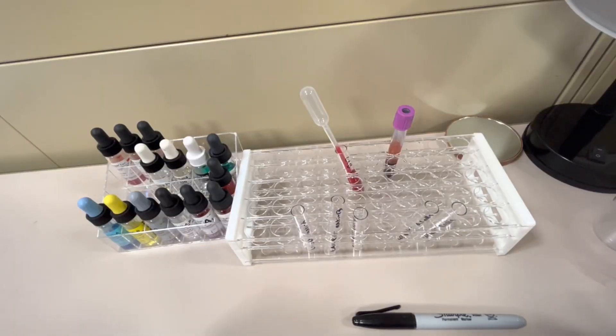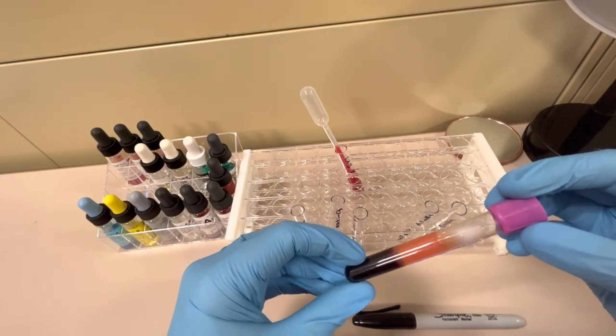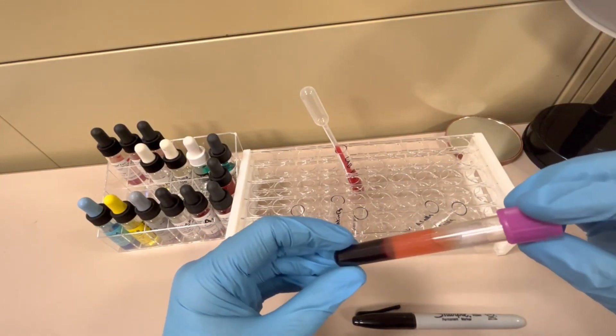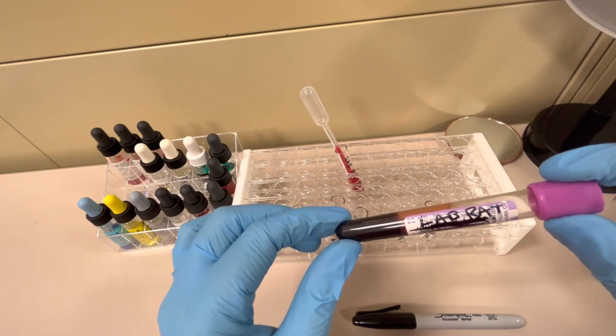Okay, so today I'm going to be demoing an ABO blood type, doing both the forward or front type and also the reverse or the back type. To do this, I need a couple of different things. The first thing is a properly labeled patient specimen. This is from a phlebotomy student of mine, and we've labeled the sample LabRat. How convenient.